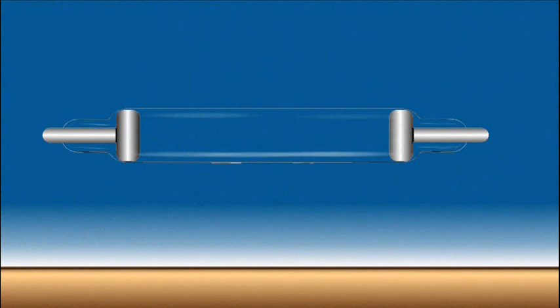This is a cathode ray tube. The cathode rays are produced in a cathode ray tube, also called a discharge tube.